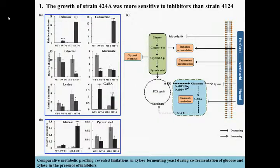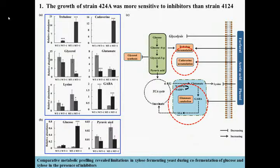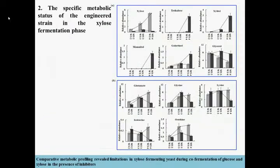Further analysis found that strain 2-4A had the lower capability to buffer redox changes caused by inhibitors, which involved the metabolism of choline, cadaverine, glutamate, and gamma-aminobutyric acid. The lower acid measured in strain 2-4A was considered to be involved in the generation of radical accumulation of furans, as well as reduced levels of amino acids.